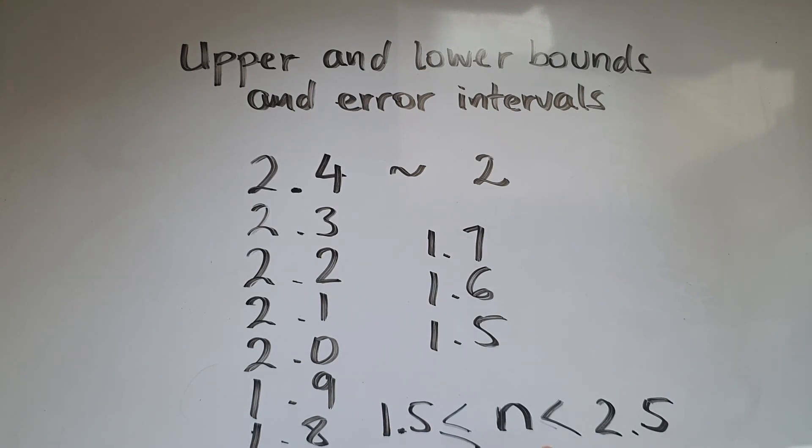So it does not include 2.5 because if you round 2.5 to the nearest whole number it'd give you 3. So anything under that such as 2.4, 2.3 and so on. So this is the error interval in this case, this is the lower bound and this is the upper bound.